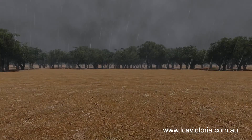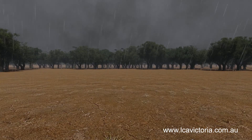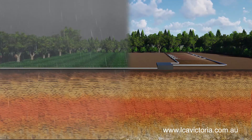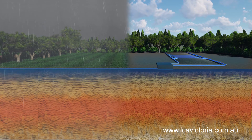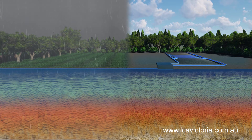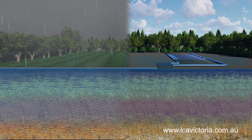The method of disposal or reuse will depend primarily on the volume of wastewater, rainfall, the risk to surrounding properties and watercourses, and of course the surface and subsurface conditions.